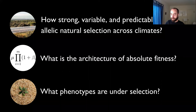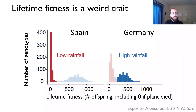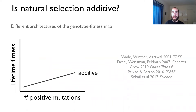I want to discuss two unpublished follow-ups. The first is: what is the true genetic architecture of absolute fitness? We've seen by conducting genome-wide associations in these fitness datasets from Spain and Germany that selection is highly polygenic. But we saw sometimes very skewed fitness distributions, which made us wonder whether genotypes with much higher fitness experience some type of positive epistasis.